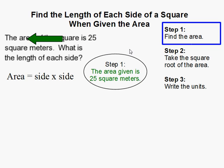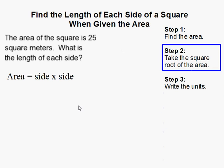So I have my 25 square meters. I need to remember that. Now, remember that the equation for the area of a square is area equals side times side.